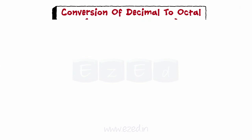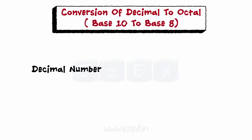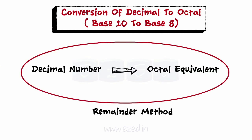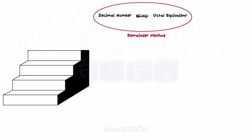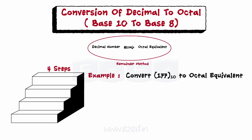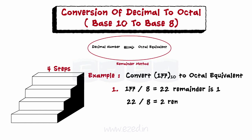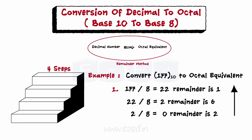For conversion of decimal to octal, that is from base 10 to base 8, the remainder method can be used, involving 4 steps: 1. Divide the decimal number by 8. 2. Indicate the remainder to the right. 3. Continue dividing into each quotient and indicating the remainder, until the divide operation produces a zero quotient. 4. The base 8 number is the numeric remainder reading from the last division to the first. The answer is read from bottom to top as 261 in octal, the same as with the binary case.